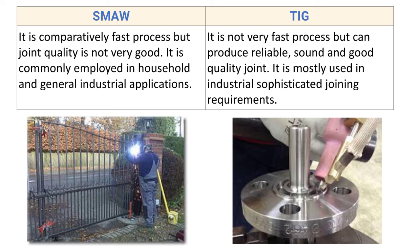TIG is not a very fast process but can produce reliable, sound, and good quality joints. It is mostly used in industrial sophisticated joining requirements. Compared to SMAW, TIG is slower because the filler must be provided additionally, but the quality of weld is comparatively better and it is used for sophisticated industrial applications.